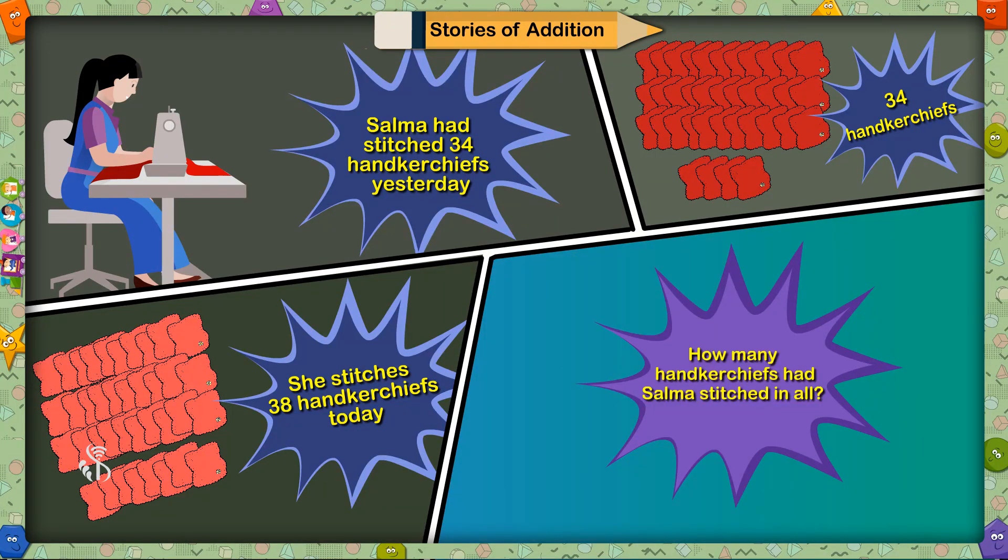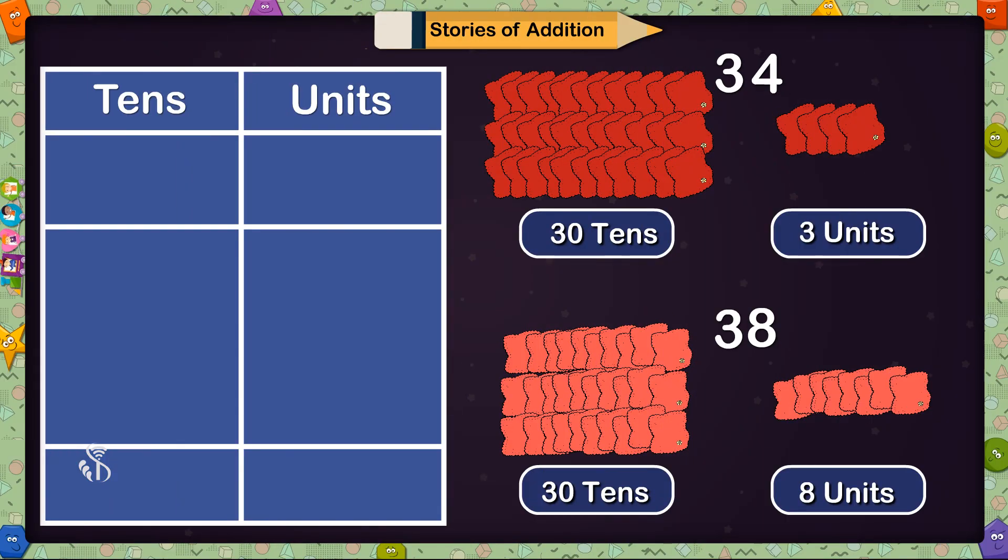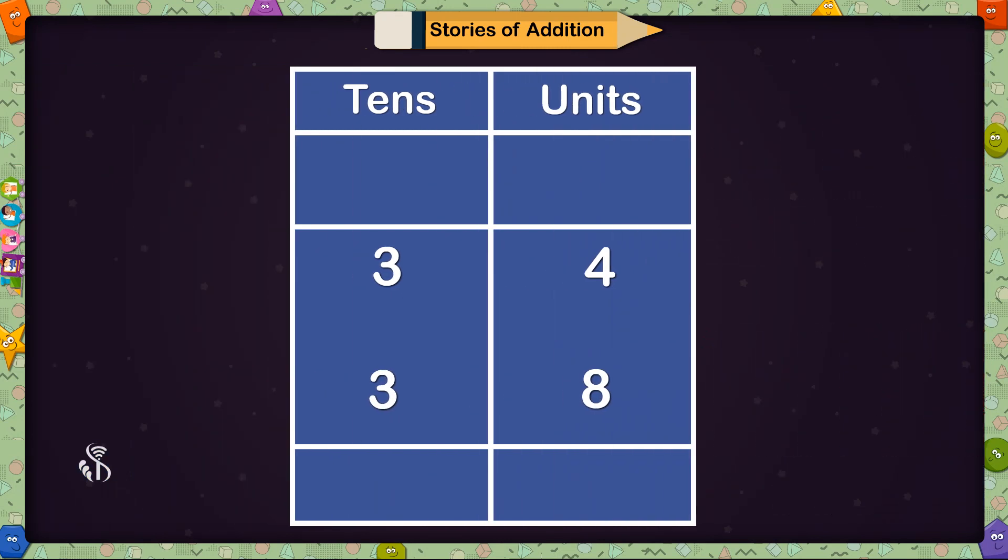Madam, I will write this sum in vertical columns first. From 34, I will write 4 in units place and 3 in tens place. And from 38, I will write 8 in units place and 3 in tens place. Now, I will add these two numbers.